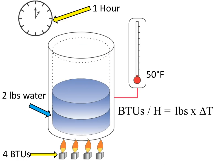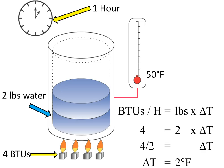As a last example, we have 4 BTUs applied to 2 pounds of water. Initially, the water temperature is at 50 degrees Fahrenheit and the duration is 1 hour. How many degrees will the water temperature increase? Substituting the numbers: 4 BTUs per hour equal 2 pounds of water multiplied by delta T. Dividing both sides by 2, delta T equals 2 degrees Fahrenheit — going from 50 to 52 degrees Fahrenheit.